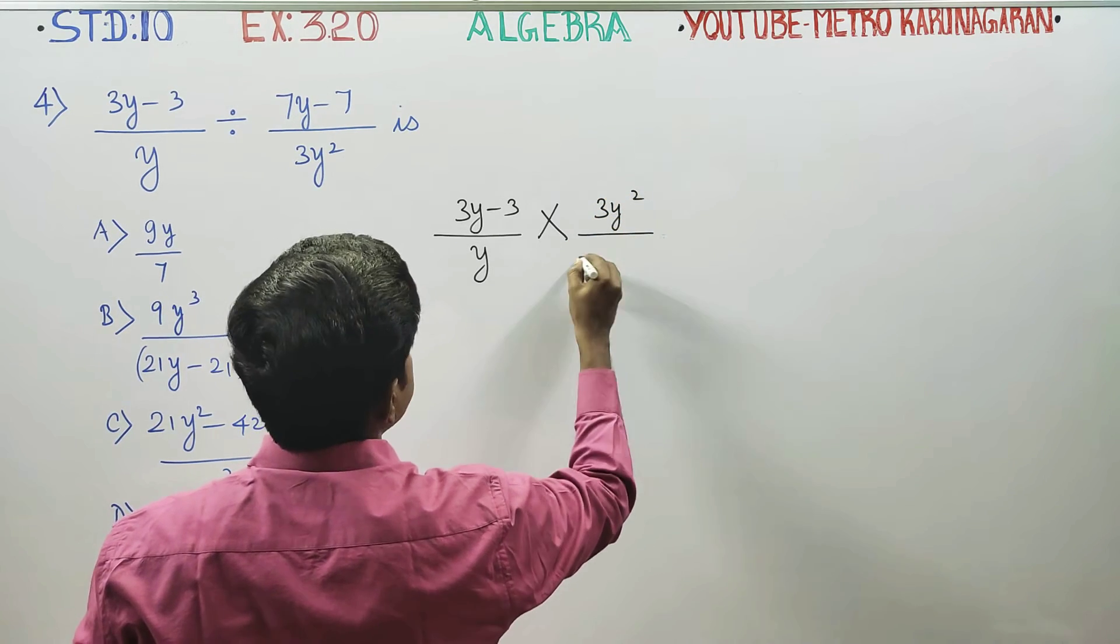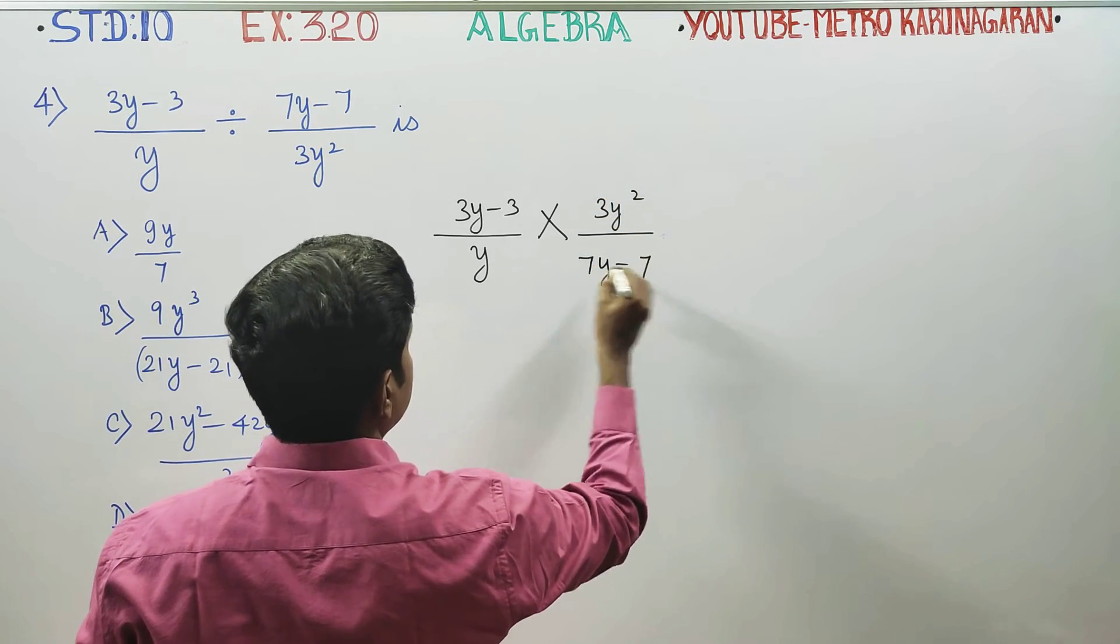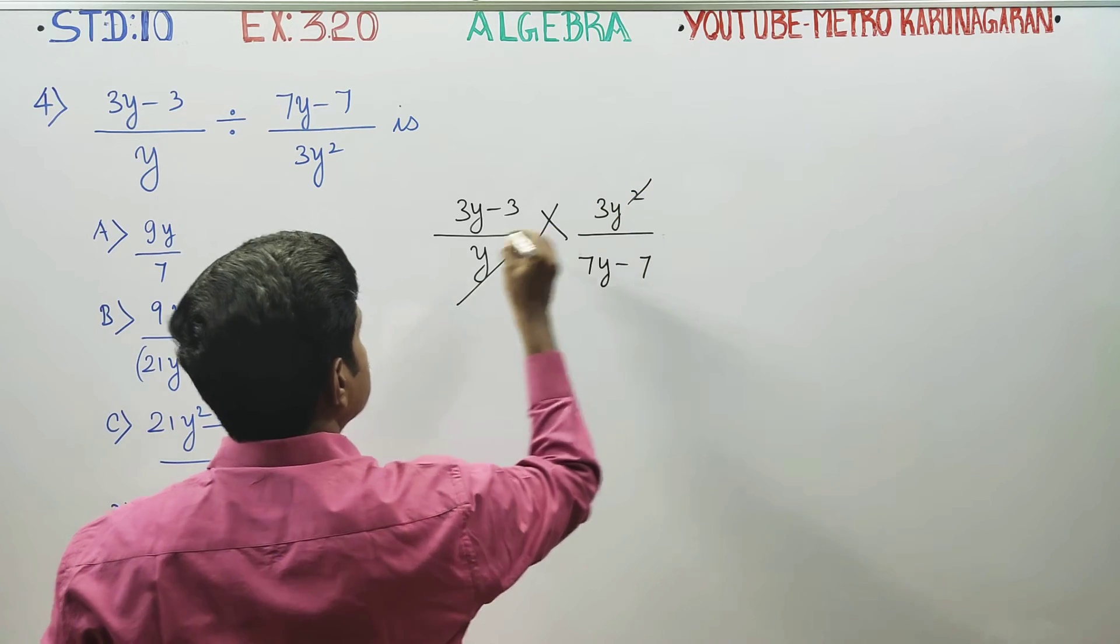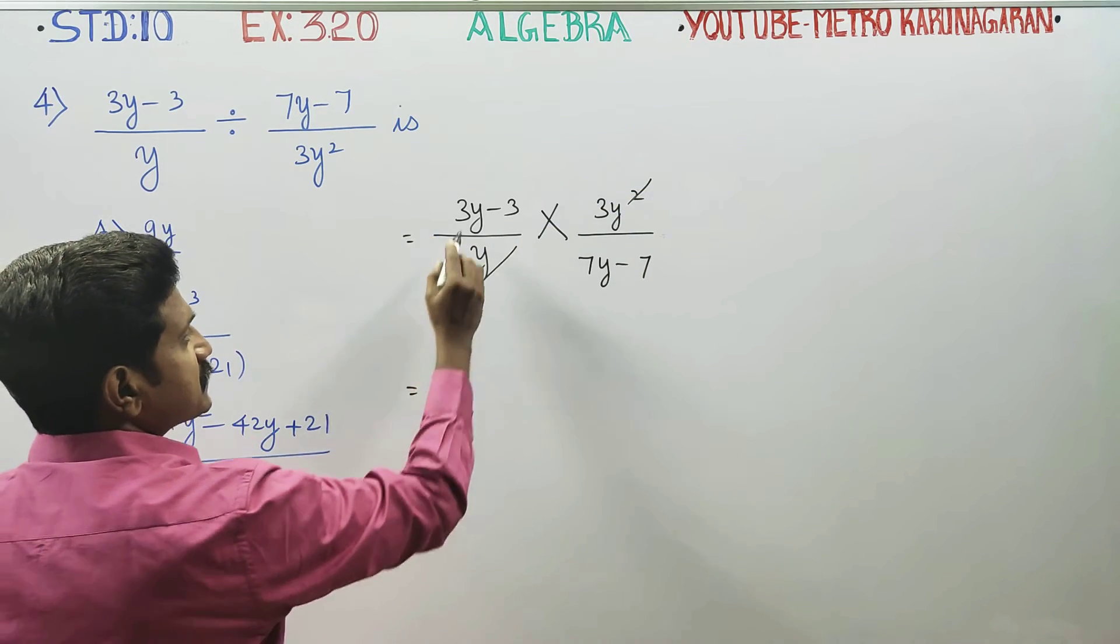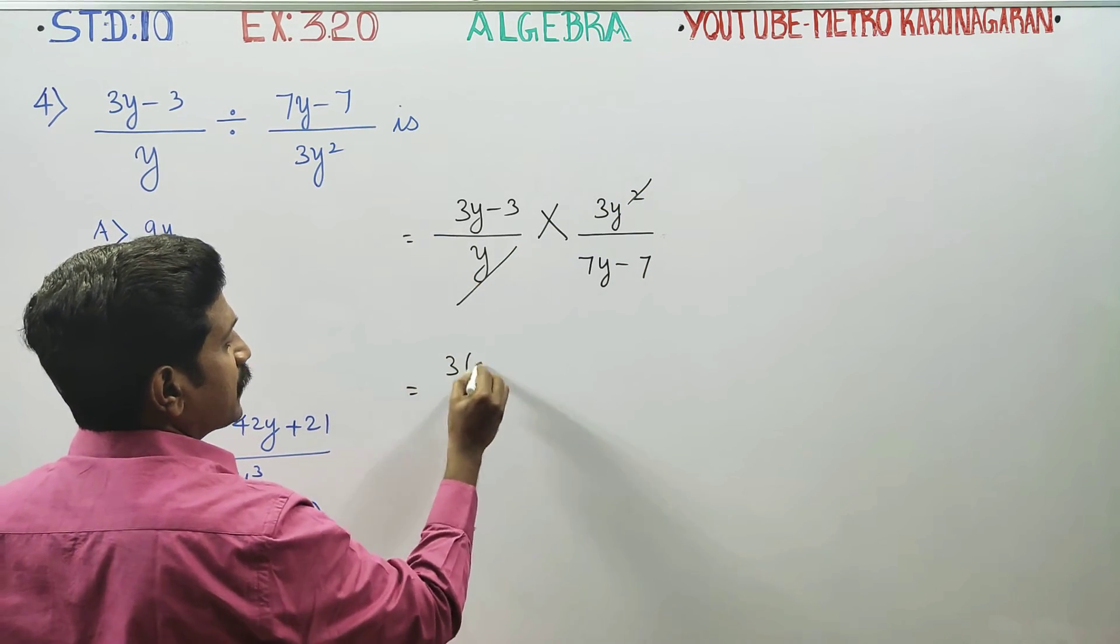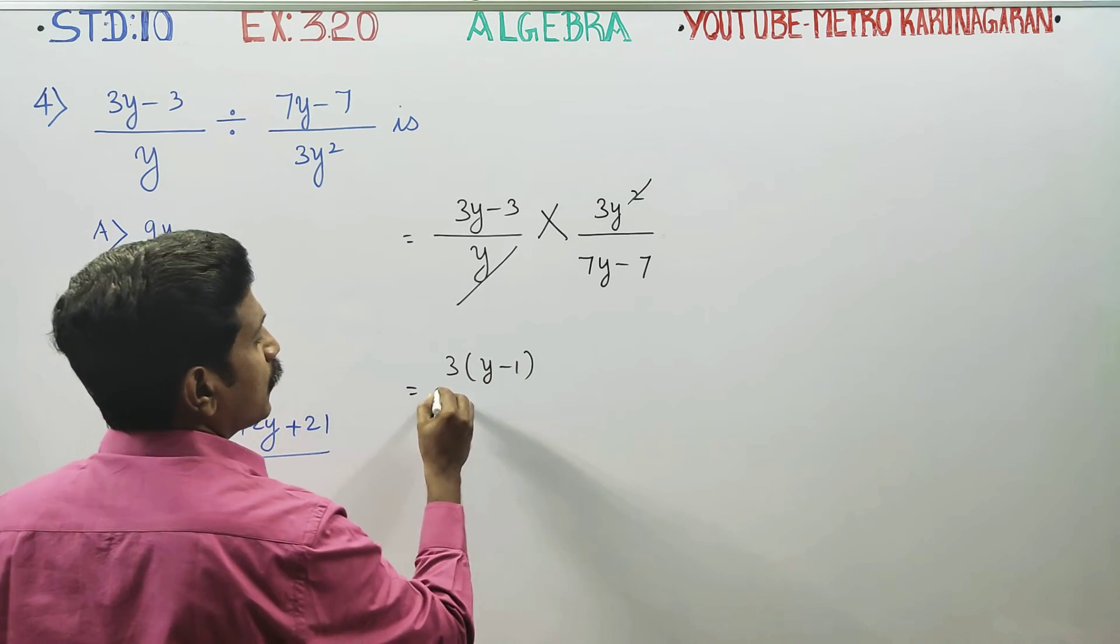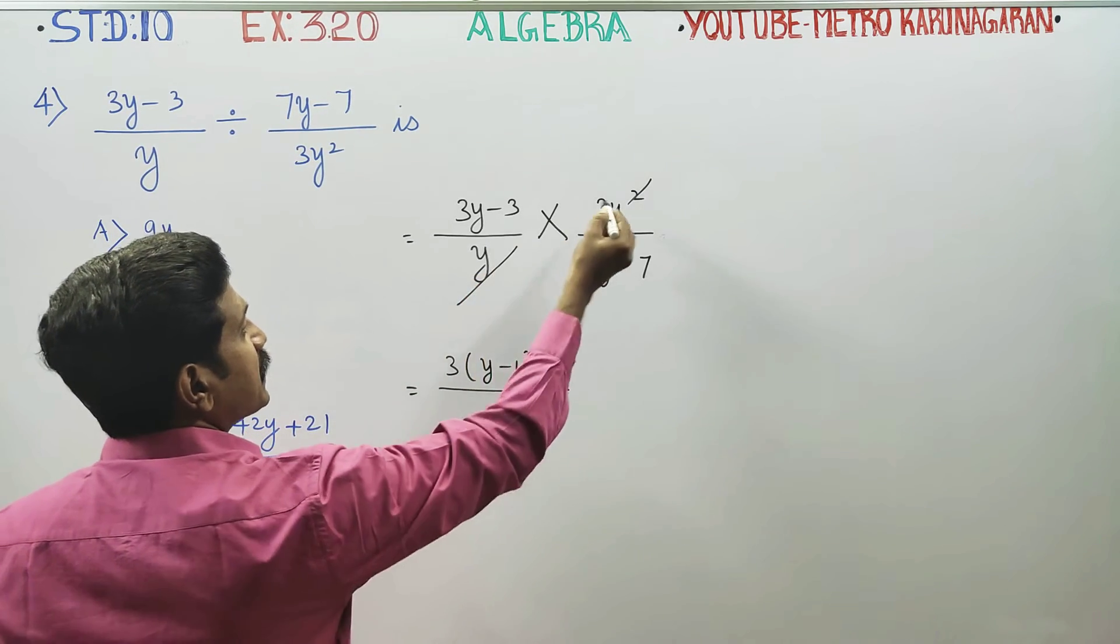3y square by 7y minus 7. This will cancel. Next, if you have 3 taken common, it will be y minus 1. Divided by, you have to cancel.